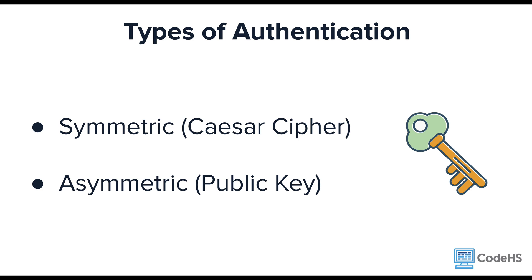Symmetric encryption is very risky because if someone intercepts your key, then they can access your information. Asymmetric encryption is stronger because there is a public key and a private key. No one knows your private key, but the public key is just that — public. So how can you be sure that the public key you are using is the right one and not someone trying to access your information?